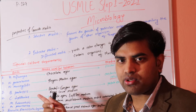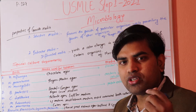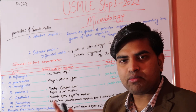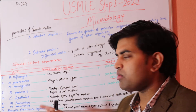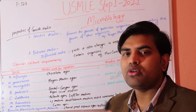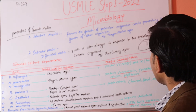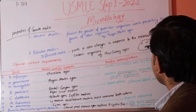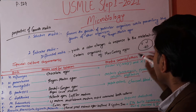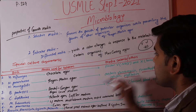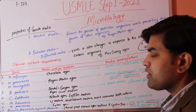In chocolate agar, both Factor X and Factor V are present, so Haemophilus influenzae can grow easily. Alternatively, you can place X and V factor discs on MHA (Mueller-Hinton Agar) — growth occurs only where both factors are present together. Where only X or only V factor is present, there will be no growth. This is the characteristic requirement of Haemophilus influenzae.